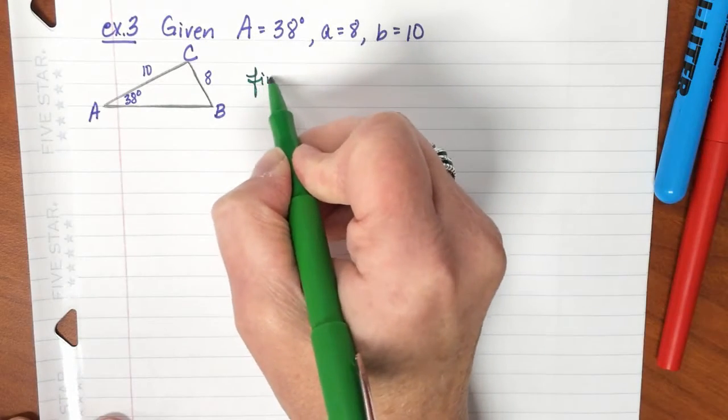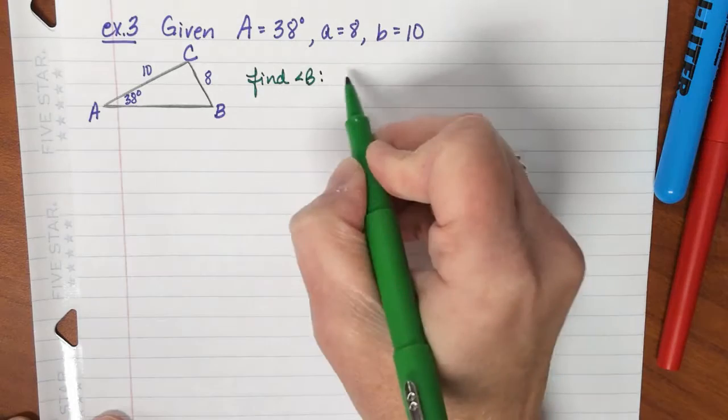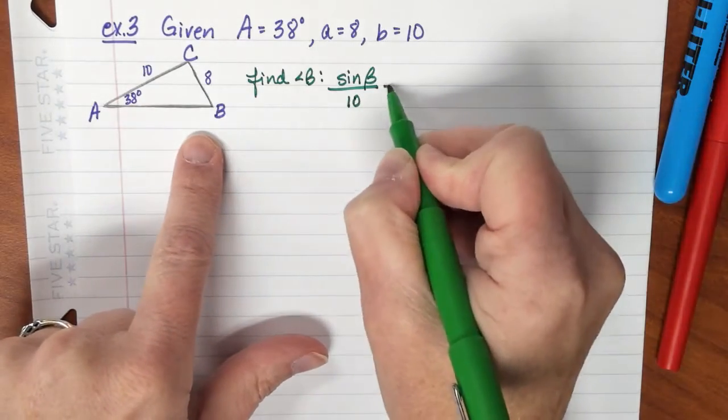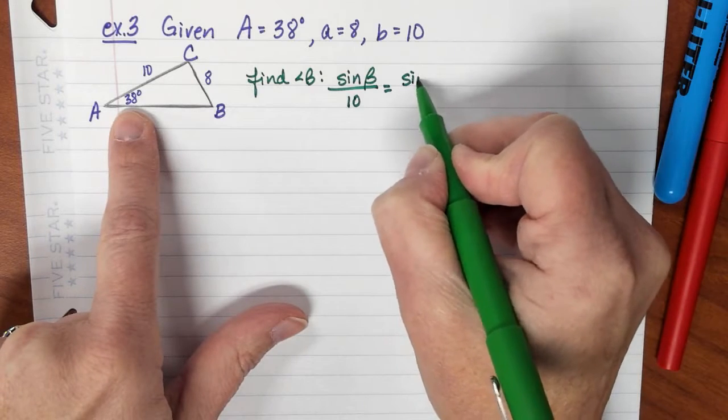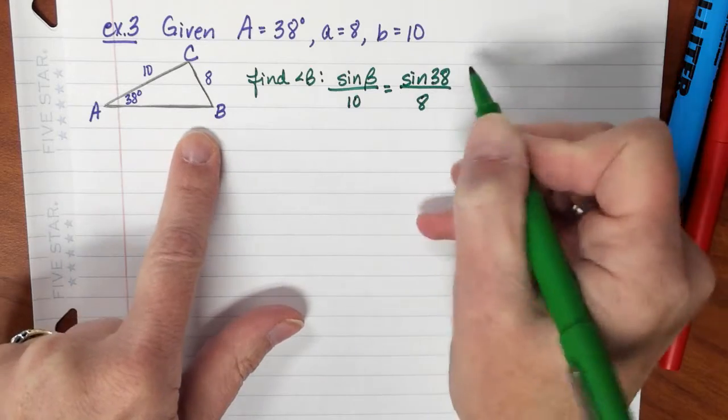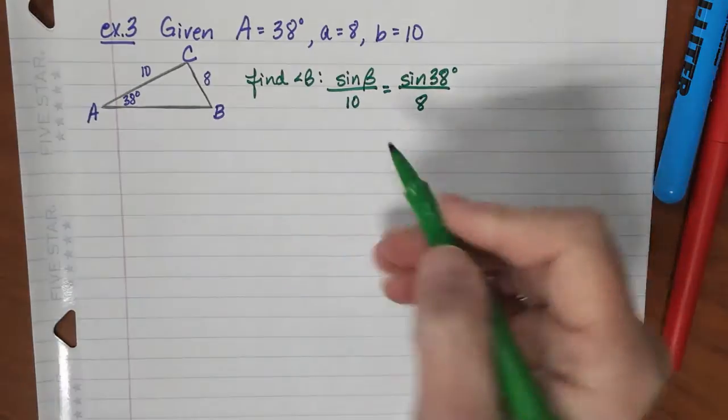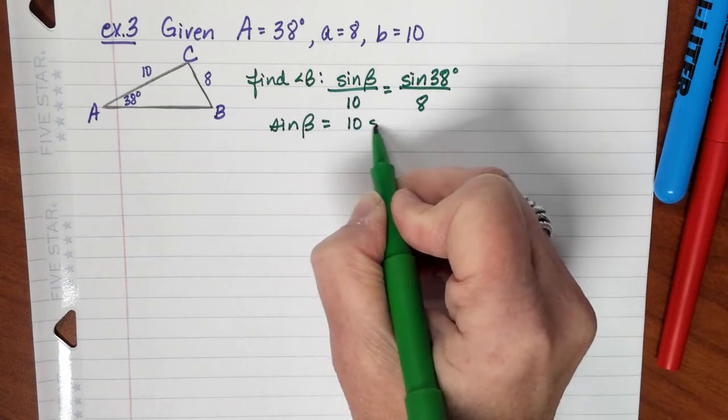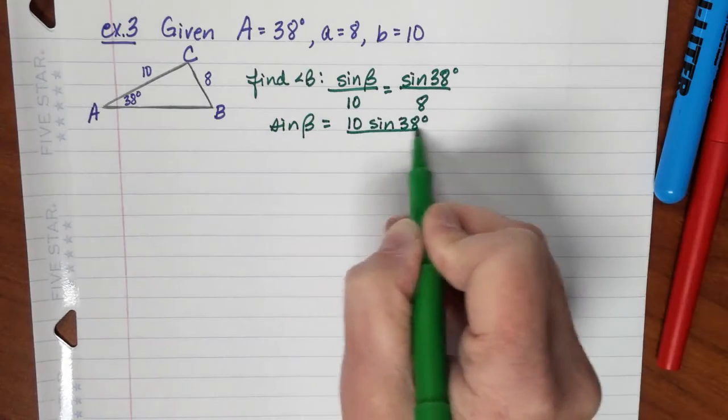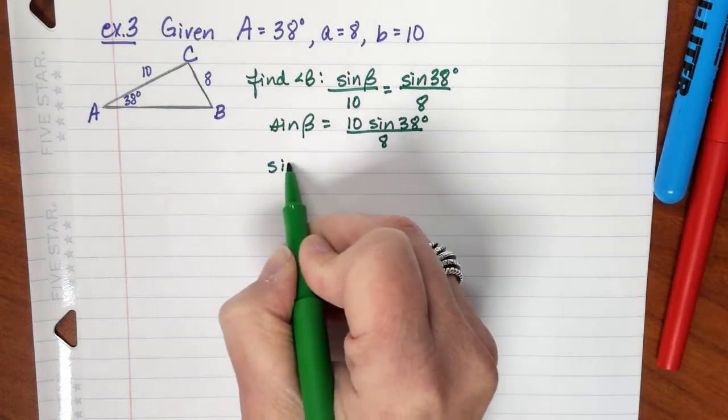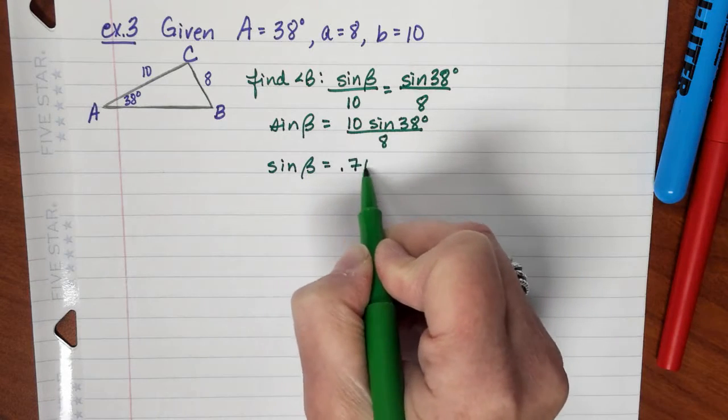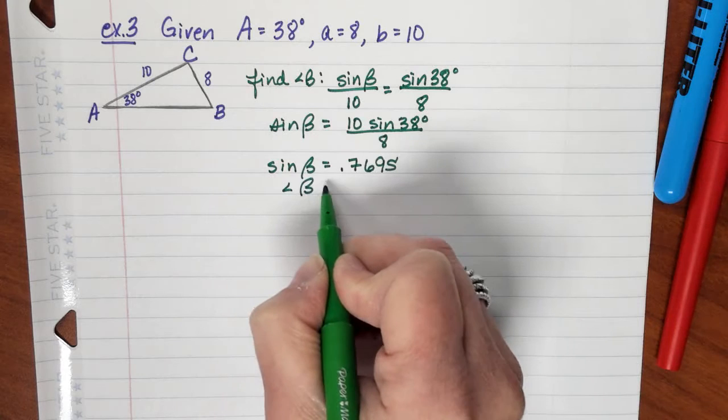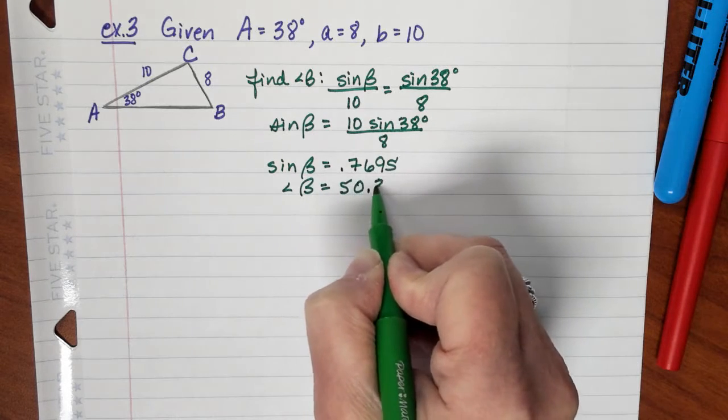So I'm going to find angle B. By doing that, I need the sine of B would be to the opposite side, which is 10, equals the sine that I know, sine of 38, is to 8. Okay, so now I need to find angle B. So this tells me that sine of B is, cross multiply, 10 times sine of 38, divided by 8. When you do that, you find that the sine of B is equal to 0.7695. Now I'm going to take the inverse sine, right, because I want the angle of B, and that's going to equal 50.3 degrees.